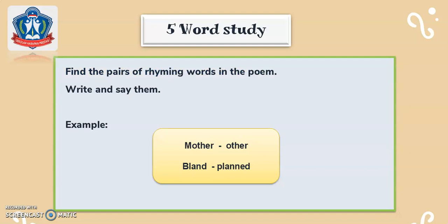For the fifth activity, it's also word study, but this time you have to find the pairs of rhyming words in the poem. Write and say them. Here are two examples: mother/other and bland/planned. Can you find more rhyming words in the poem, children?